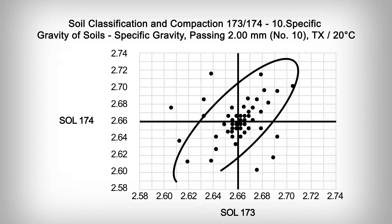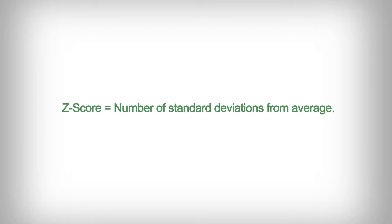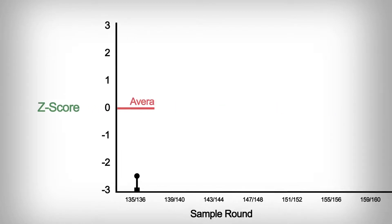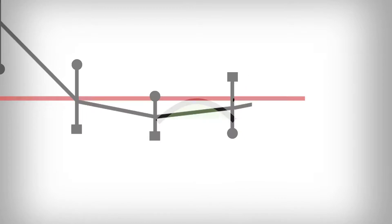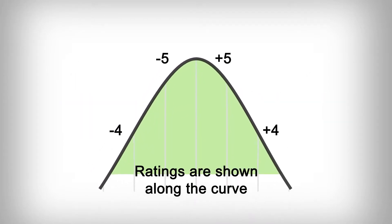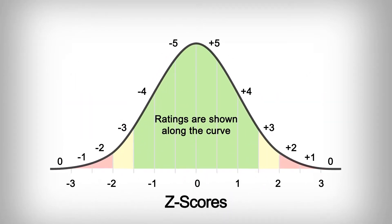When a laboratory submits their results, it's basically what they call consensus values. So it's off of the entire whole slew of laboratories and all of their participation. We determine that grand average and then we assign ratings based off of the normal distribution and standard deviation. Laboratories that are average or meeting the bar will receive satisfactory ratings, typically fives, fours, and threes, and then as you progress further away from that standard deviation, you'll receive a rating of a two, one, or zero.